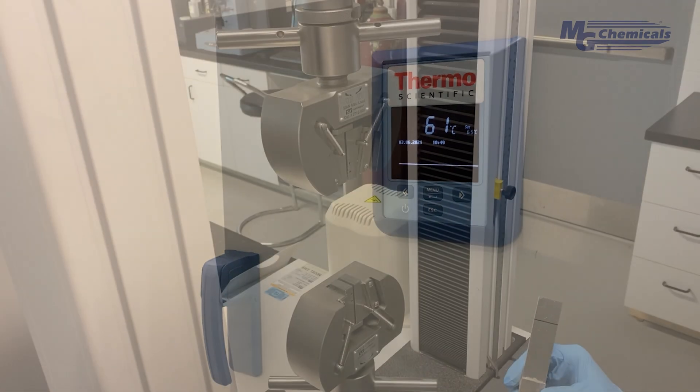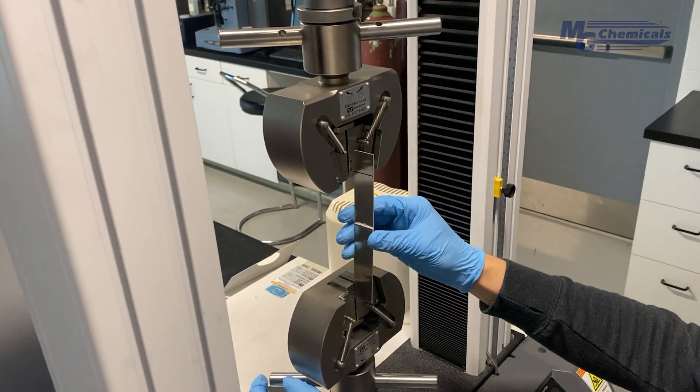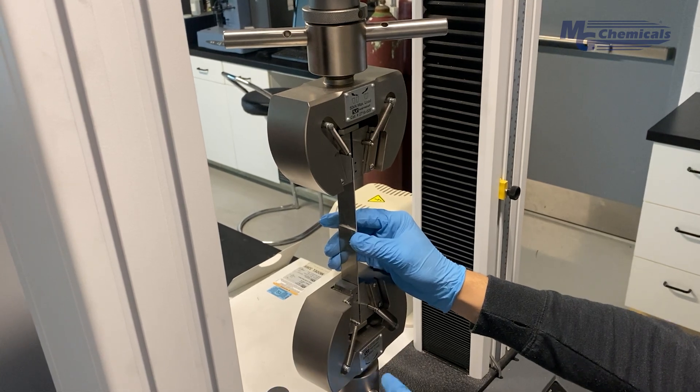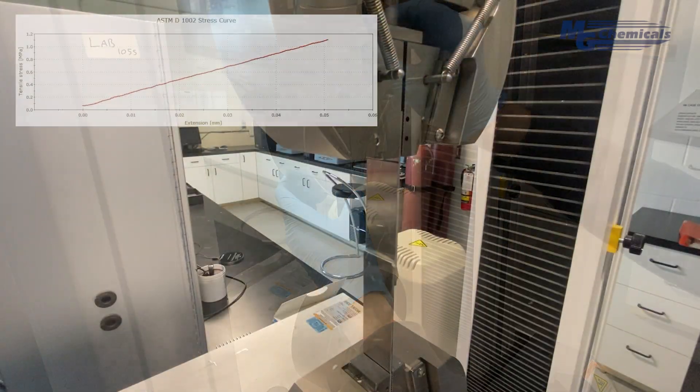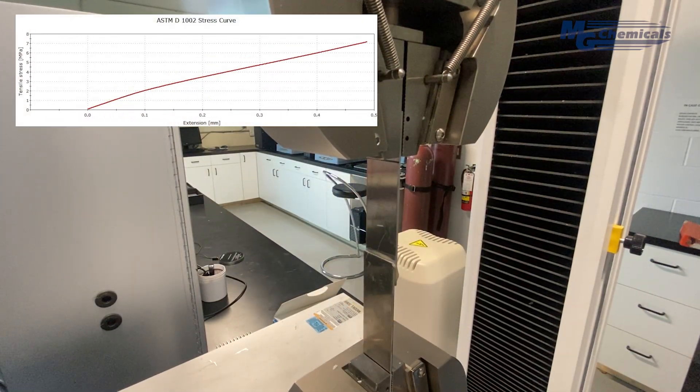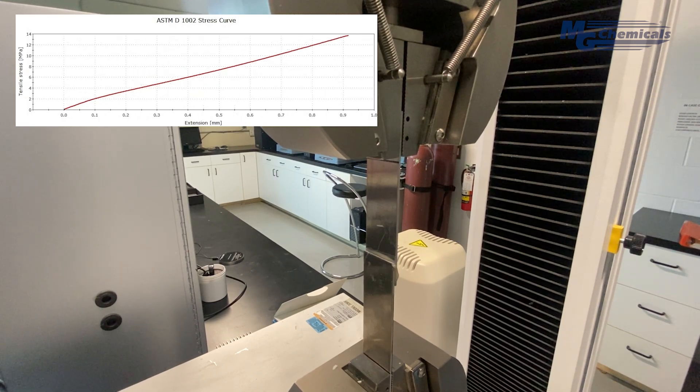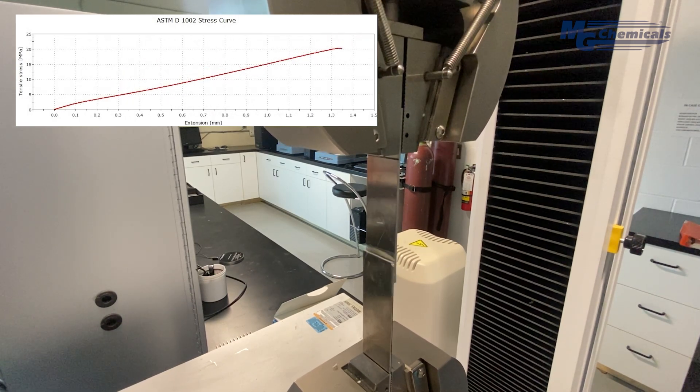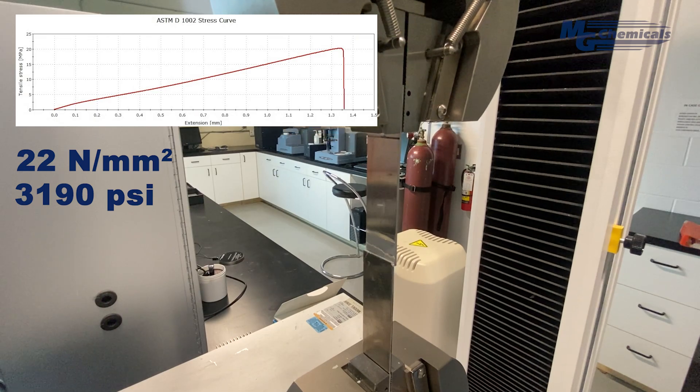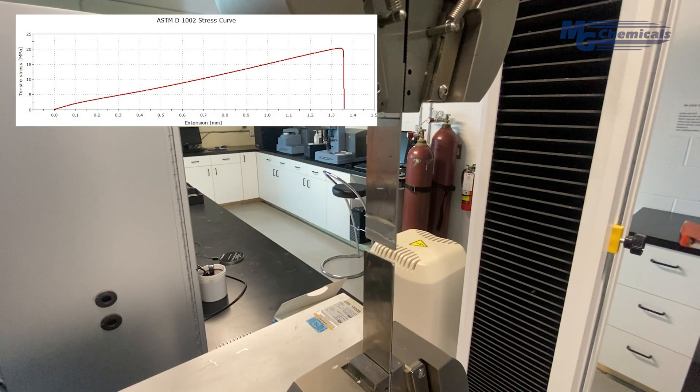Adhesive strength is measured using the lap shear test pictured here. This is a good measurement to compare the adhesive strength of different materials. This test measures the amount of pressure needed to physically pull apart bonded substrates. Here we've demonstrated the adhesive used to bond two metallic substrates.